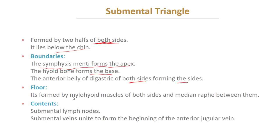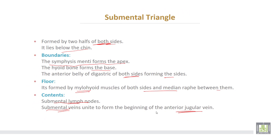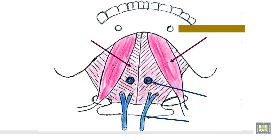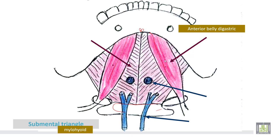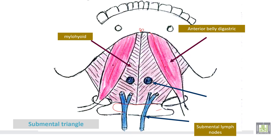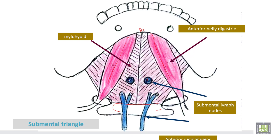The floor of the submental triangle is formed by the mylohyoid muscles of both sides and the median raphe between them. Contents of the submental triangle include: submental lymph nodes, and submental veins which unite to form the beginning of the anterior jugular vein. On the visual: the symphysis menti forms the apex, the hyoid bone forms the base, the anterior belly of the digastric muscle is seen here, and the mylohyoid muscle and submental lymph nodes are also shown, along with the anterior jugular vein.